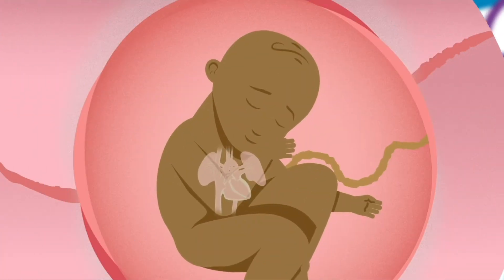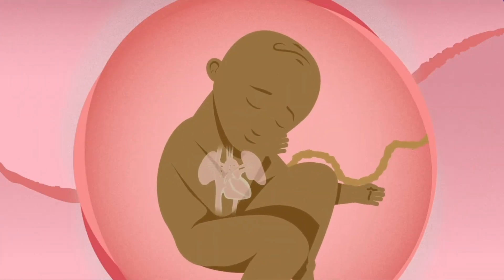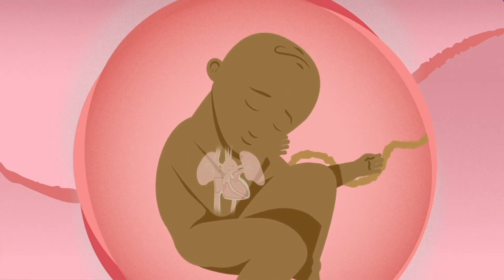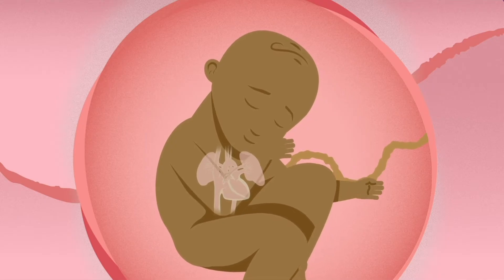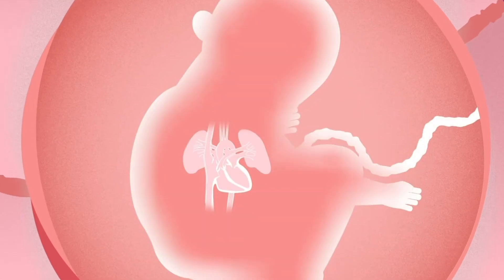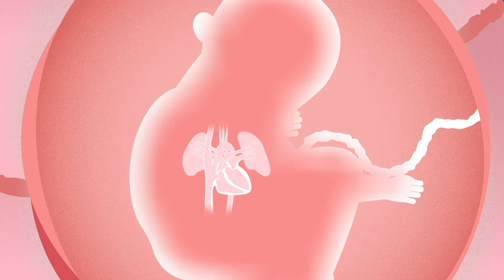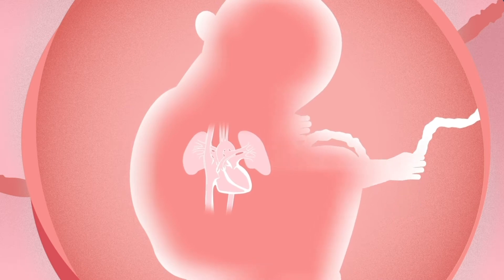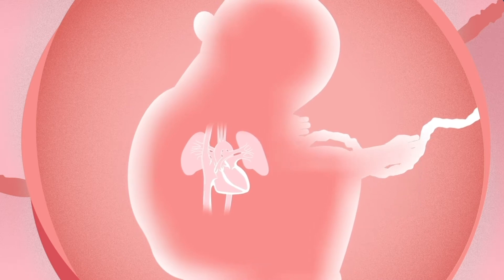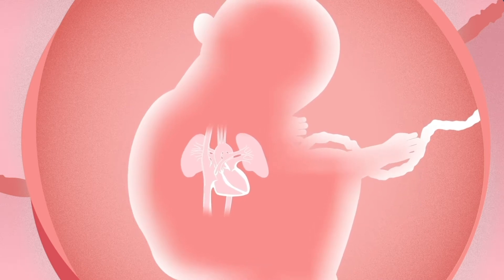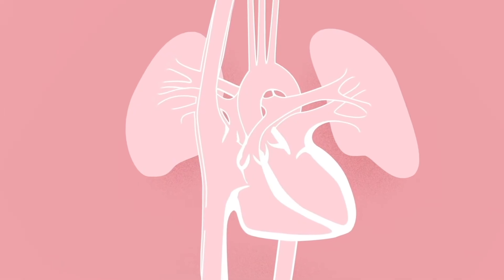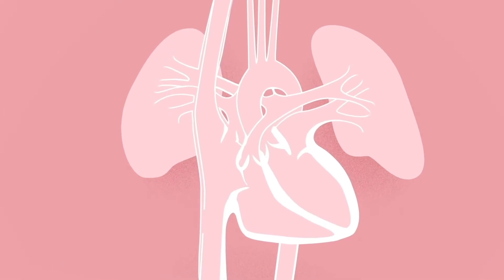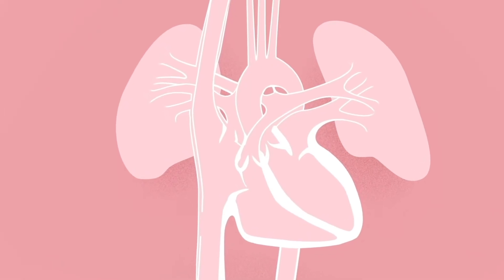A normal heart sits in the left side of the baby's chest. It has four chambers and four heart valves that the blood passes through. With each heartbeat, blood travels through the heart and to different parts of the body through blood vessels. Blood vessels are small tubes that carry blood away from the heart and back to the heart.